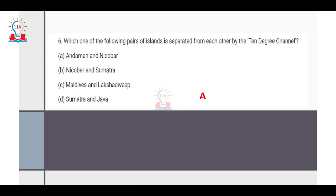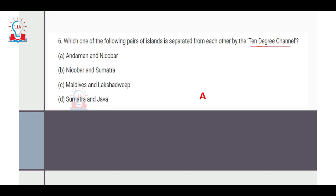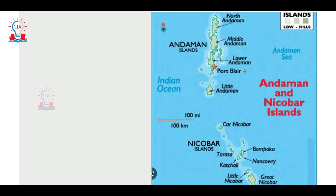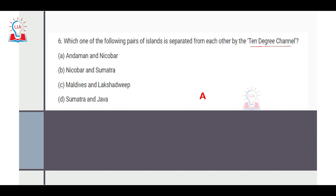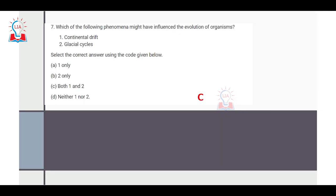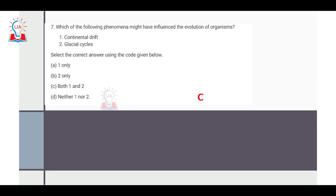The next question is related to the Andaman and Nicobar Islands. It asks which pair of islands is separated by the 10 Degree Channel. The correct answer is Andaman and Nicobar. The northern island groups are the Andaman Islands and the southern groups are the Nicobar Islands. The water channel separating Little Andaman from Car Nicobar is called the 10 Degree Channel because it is located near 10 degrees latitude. Additionally, the small channel separating South Andaman from Little Andaman is called Duncan Passage.